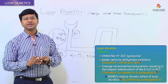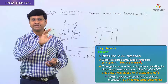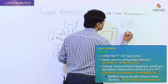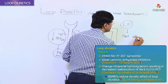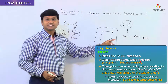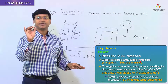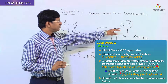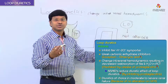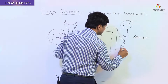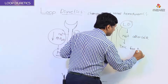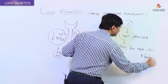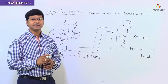Loop diuretics will not alter the glomerular filtration rate. Because they do not alter the GFR, loop diuretics are the diuretics of choice in the presence of moderate to severe renal failure. That is why these drugs are considered the drug of choice for moderate to severe renal failure.